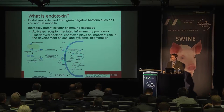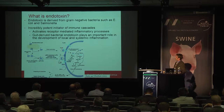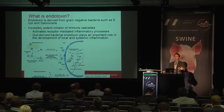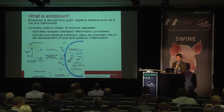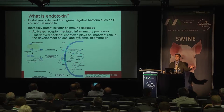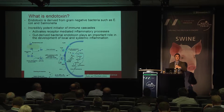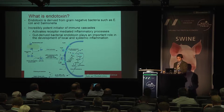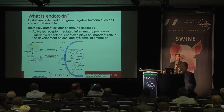Toll-like receptor 4 in particular, once engaged or bound by an endotoxin, initiates a cascade of events leading to the production of pro-inflammatory cytokines, a febrile response, and the innate immune response. Interestingly, tolerance builds up in cells with regard to receptor binding — once those receptors are bound they can be shed off the membrane, causing desensitization. That's why if you give an LPS challenge to a pig or bird and repeat it a day or two later, you get a reduced response.